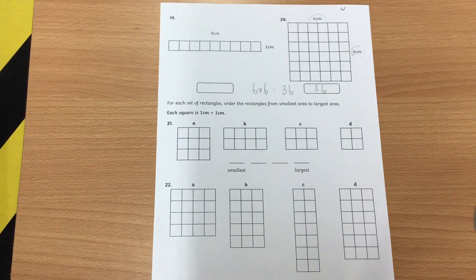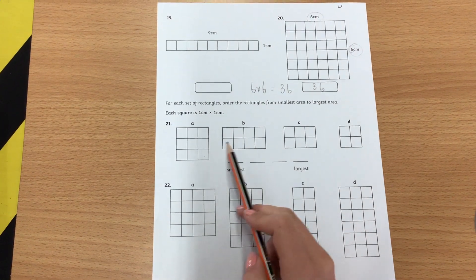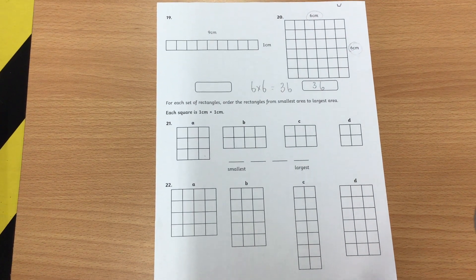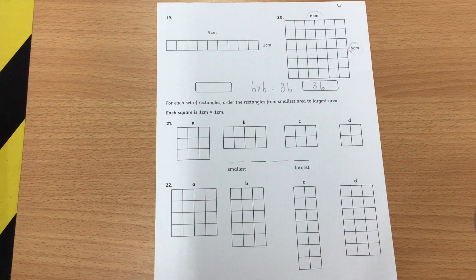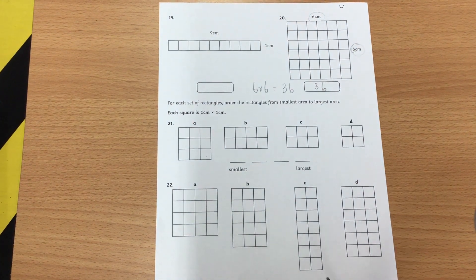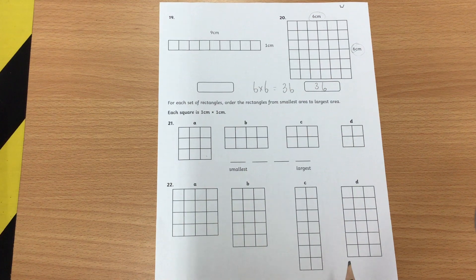Okay, so for these questions here you need to arrange these squares from smallest to largest by their area. Now my tip to you today is before you look at these and think well that's the smallest shape, that's the biggest shape, find the area first before you order them.